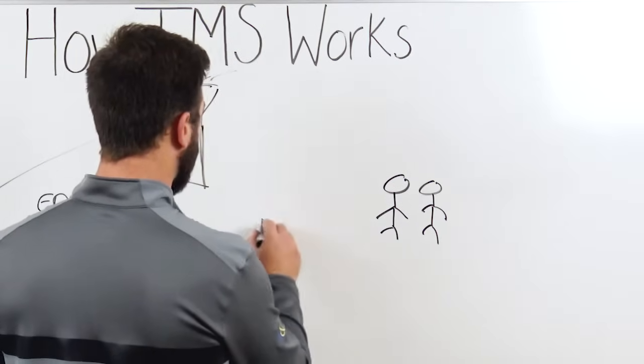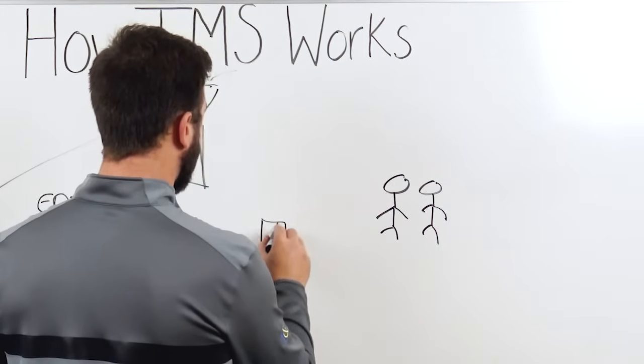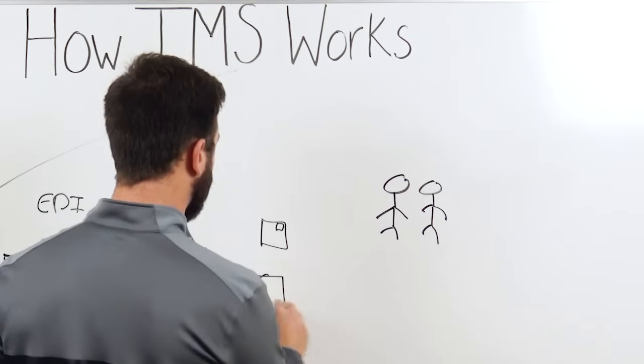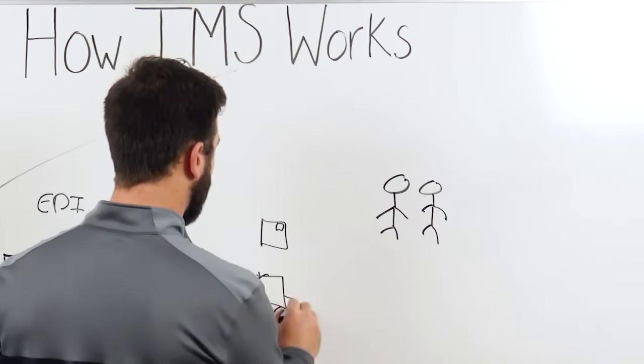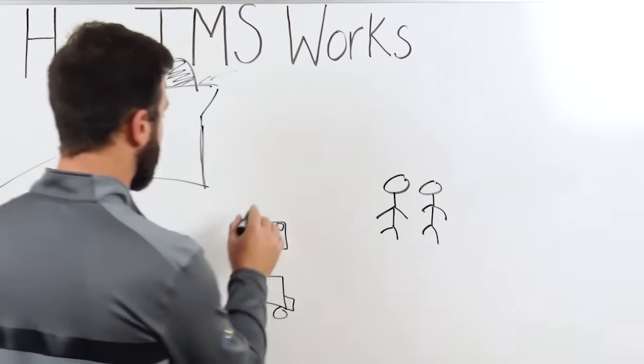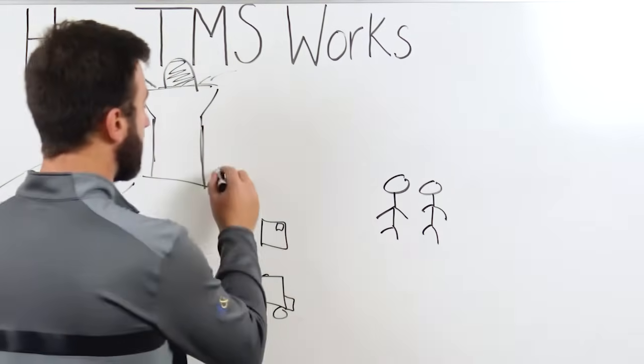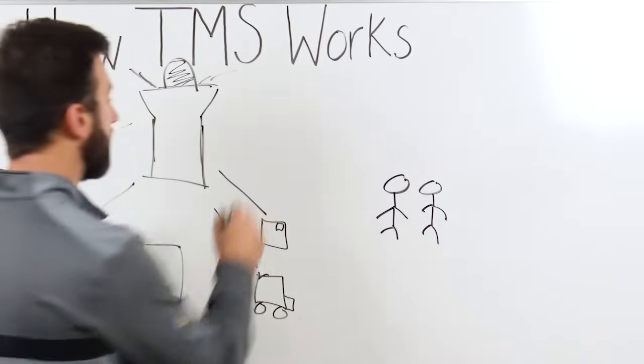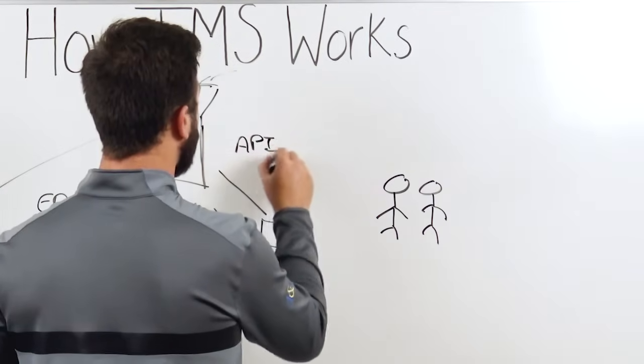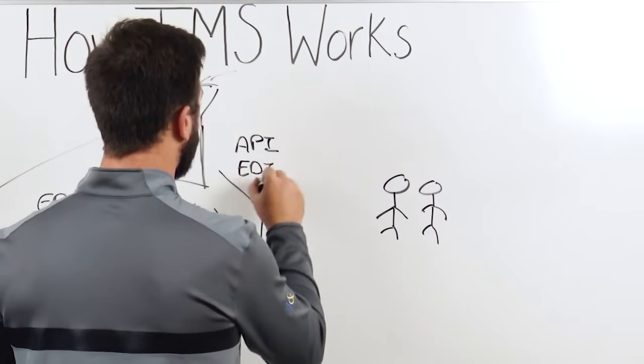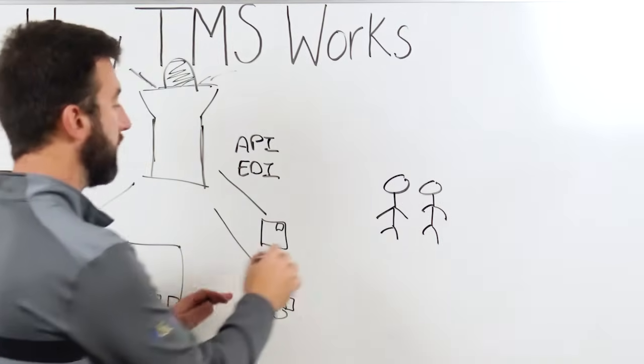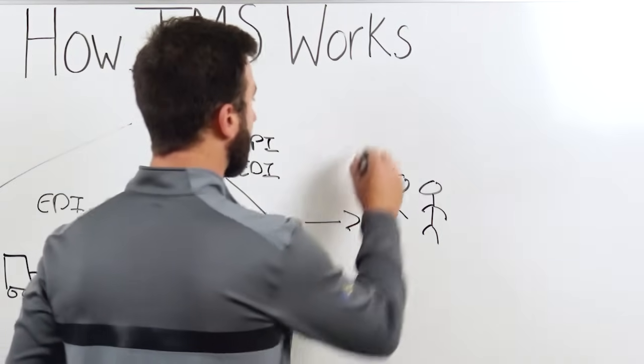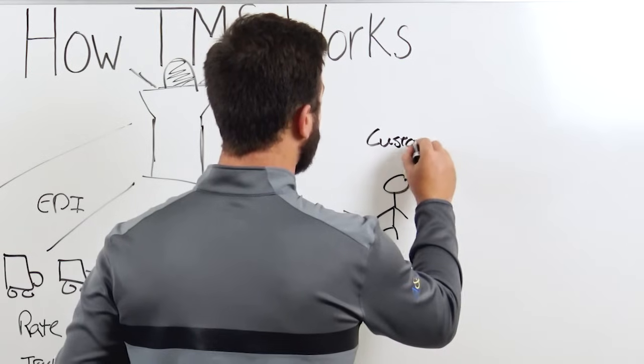But let's pretend that we have both packages and we have trucks that are going to our end customers. What we're going to want to do is connect to these trucks and to these parcel carriers using API and EDI connections, and we will track that all the way through to delivery to our end customers.